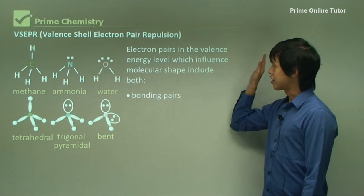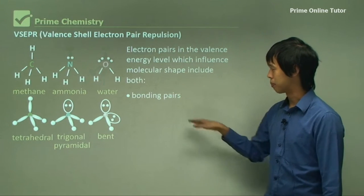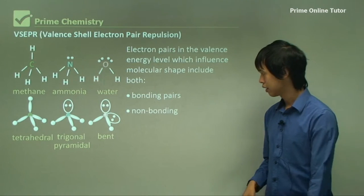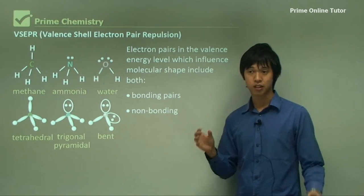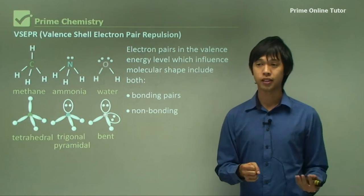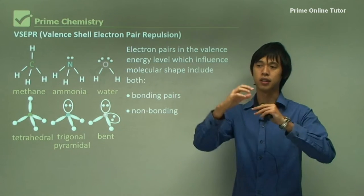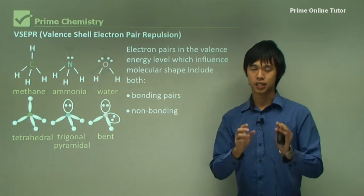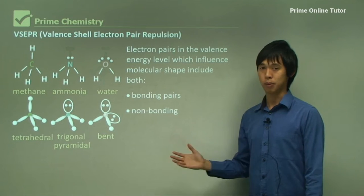The electron pairs in the valence energy level, which influence molecular shape, include both bonding pairs. So even bonding pairs of electrons affect the shape. Non-bonding pairs, which sounds more confusing, because the non-bonding pairs, the lone pairs, actually influence where the bonding pairs can go. Remember that each of the electron pairs wants to organize themselves so that the repulsion is the least. So obviously they'll affect the shape as well.